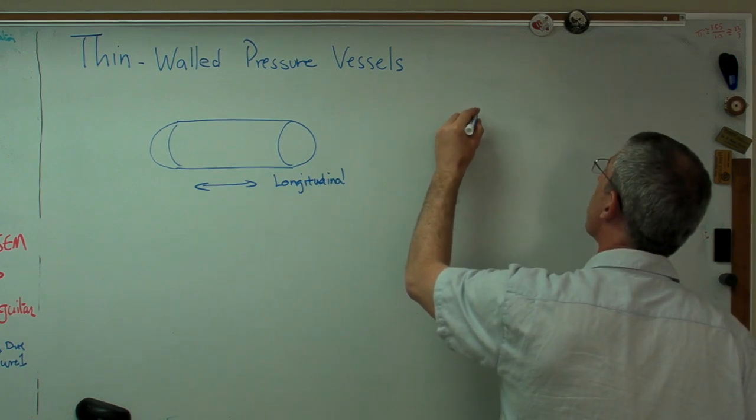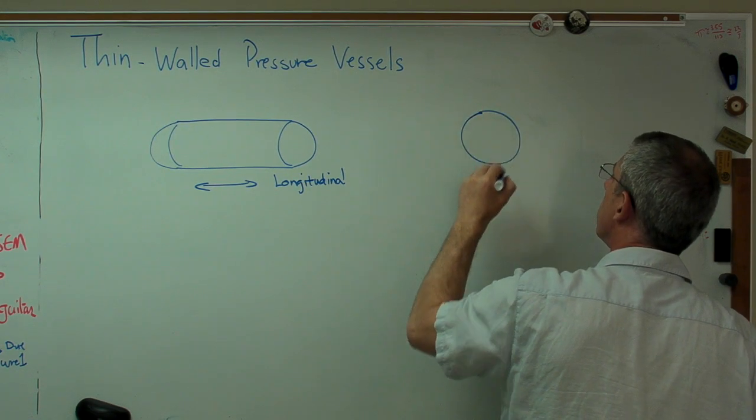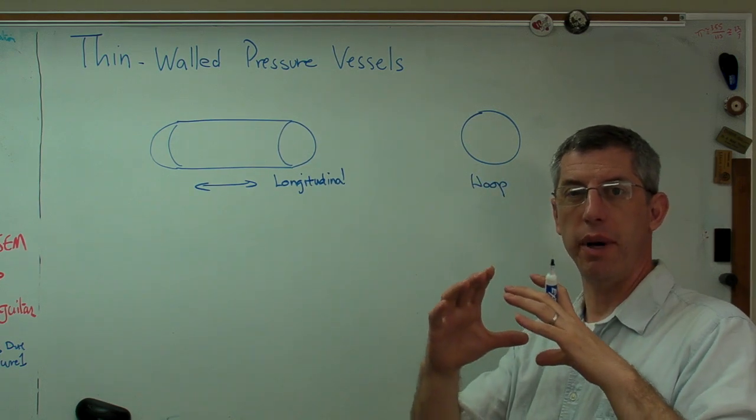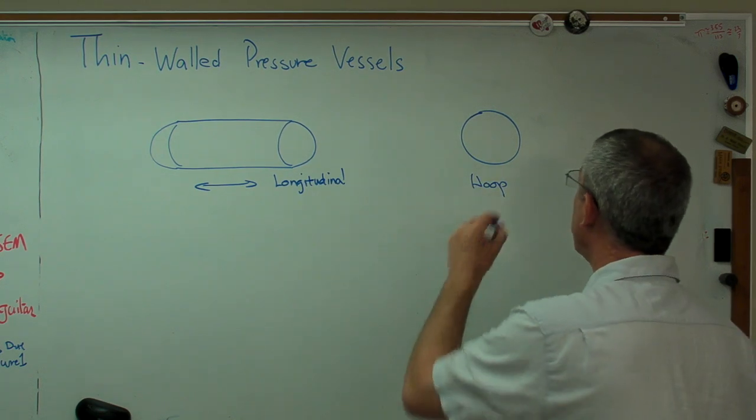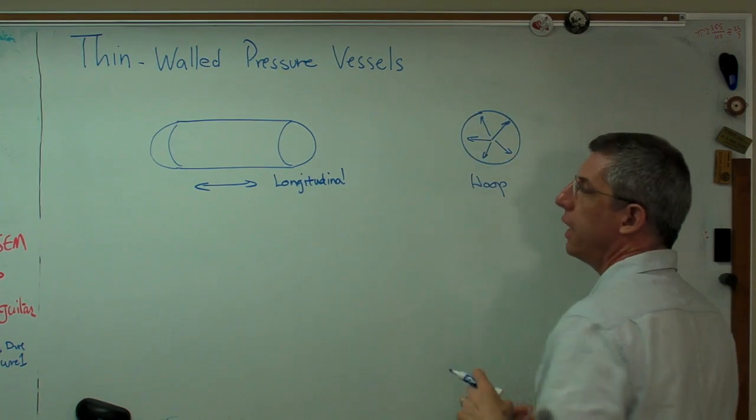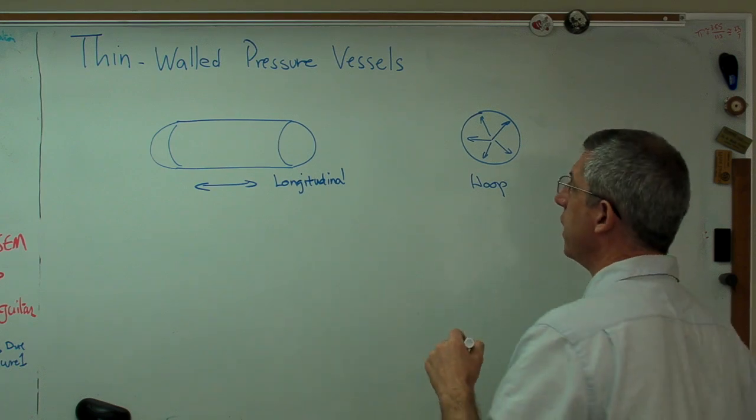All right. There's other kinds of stress. It's called hoop stress. Hoop stress is what makes the diameter want to get bigger. And that's easy to imagine. There's pressure inside the pressure vessel and then the diameter is going to try to get bigger.